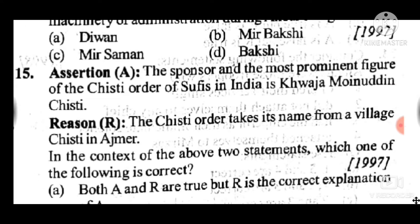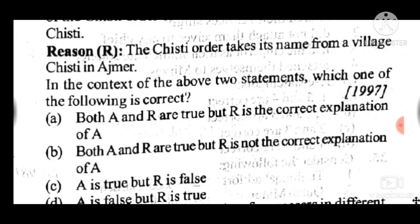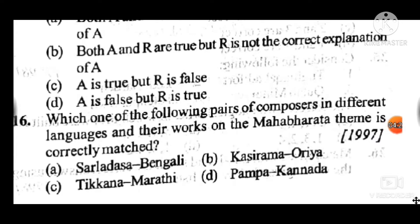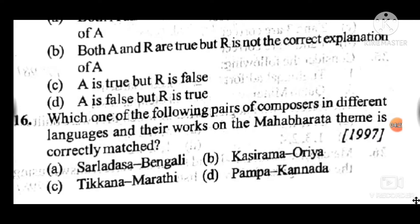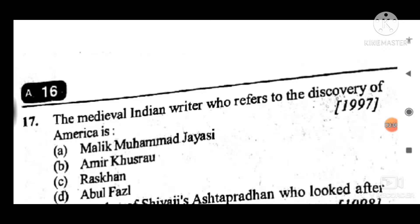Answer to question 15 is C: A is true but R is false. The reason is false — the assertion that the Chishti order takes its name from a village Chisht in Ajmer is a false assumption. Question 16: Which one of the following pairs of composers in different languages and their work on the Mahabharata theme is correctly matched? Answer to question 16 is D: Pampa in Kannada.